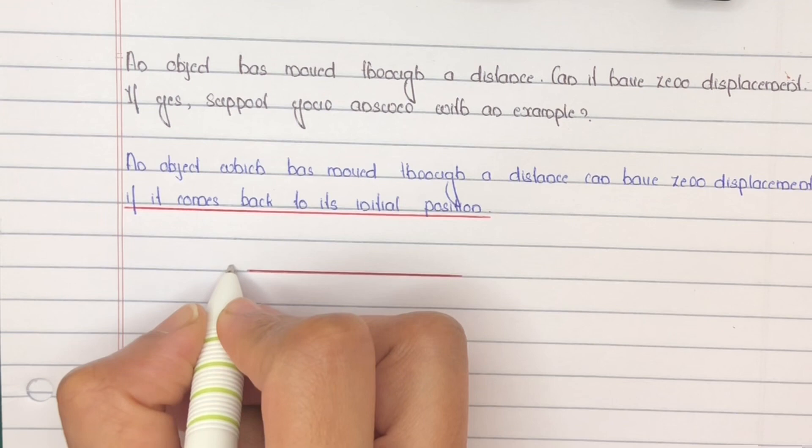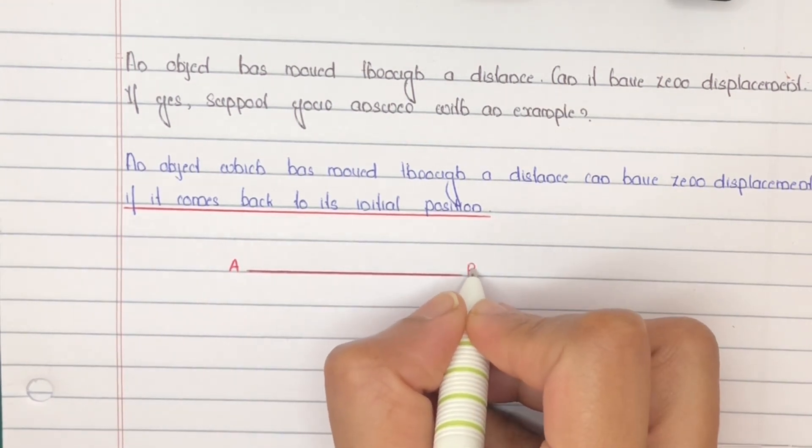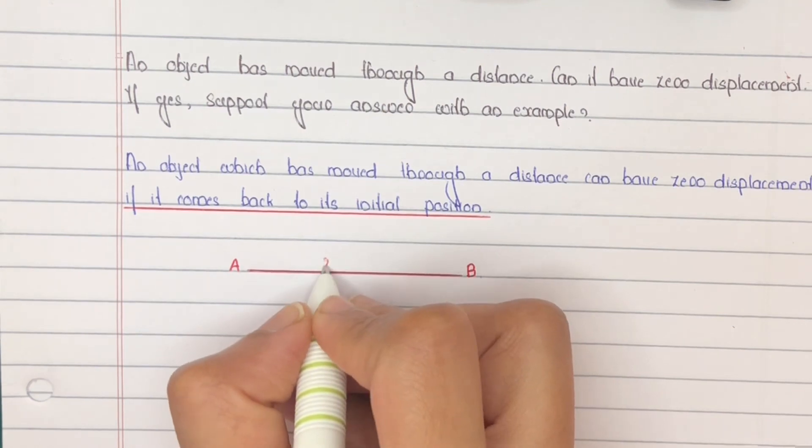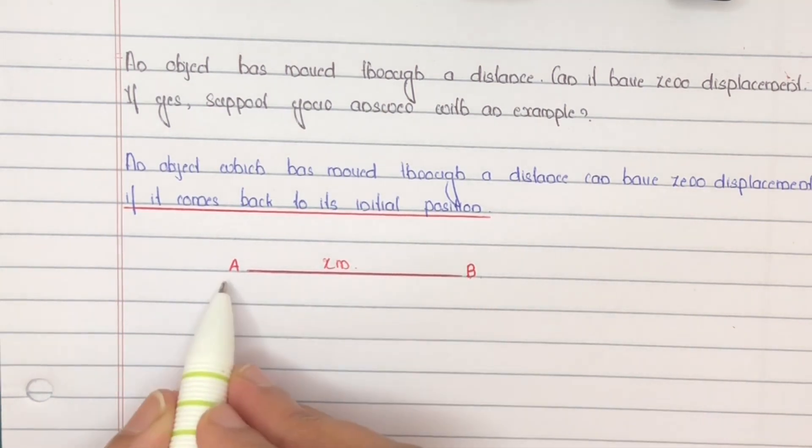Suppose a body starts at point A and reaches at point B. Let us assume its length is x meters. Then it returns back to A, that is, returns back to its initial position.